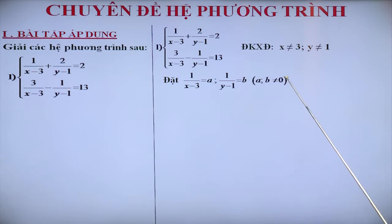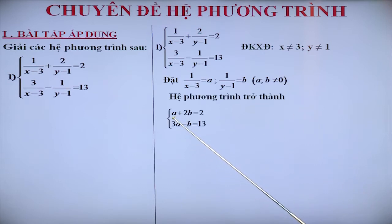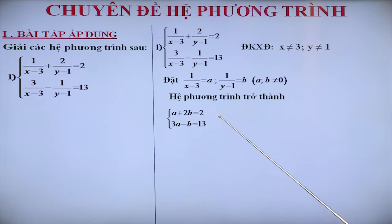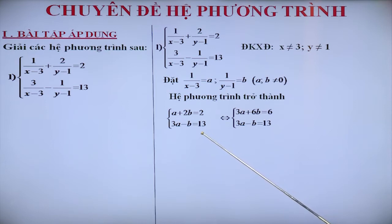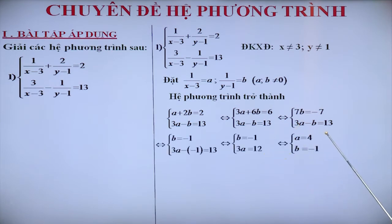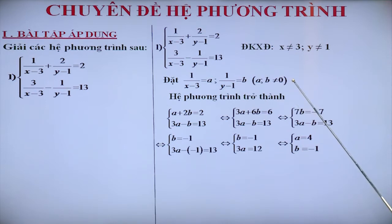Khi đó, hệ phương trình của chúng ta trở thành A cộng 2B bằng 2 và 3A trừ B bằng 13. Hệ phương trình mới này là một hệ bậc nhất 2 ẩn với ẩn là A và B. Giải hệ phương trình này bằng các phương pháp thế và cộng, chúng ta tìm được A và B. Ở trên bảng, cô đang trình bày lời giải theo phương pháp cộng. Chúng ta tìm được A bằng 4 và B bằng âm 1. Đối chiếu 2 giá trị của A và B với điều kiện A và B khác không, chúng ta thấy nó thỏa mãn.